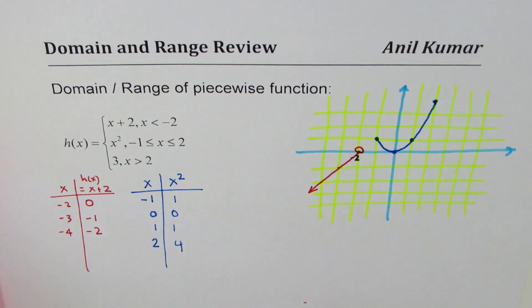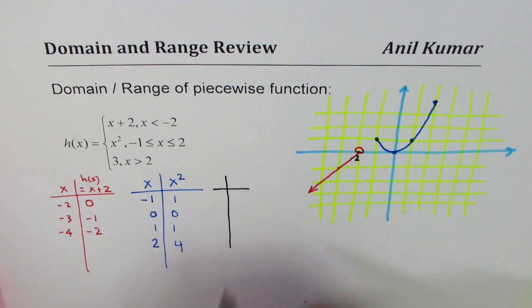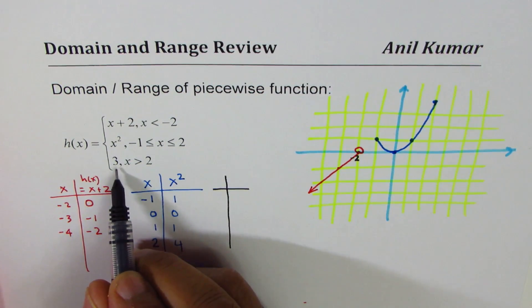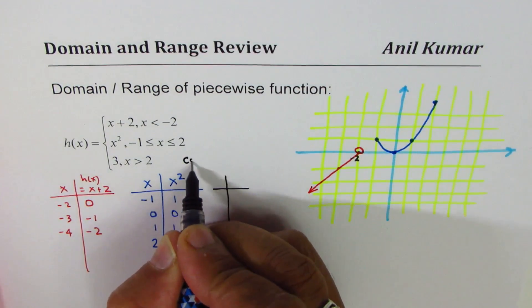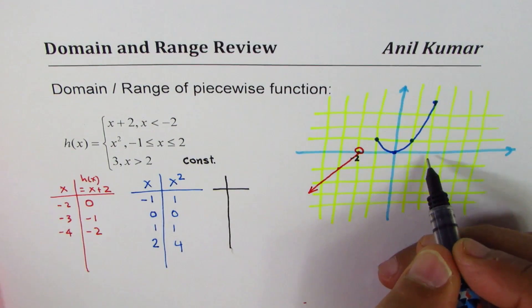Now, for the third piece, there's no need to make a table. It says for x greater than 2, the value is 3. So it's a constant function. This is a constant function.